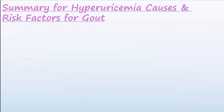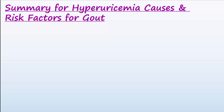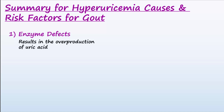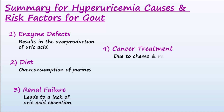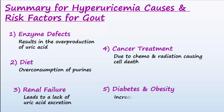In summary, conditions that lead to hyperuricemia and gout are as follows: enzyme defects that result in overproduction of uric acid; diet from the overconsumption of purines; renal failure, which causes a lack of uric acid excretion; cancer treatment, which causes cell death; and diabetes and obesity, which bring about a more acidic environment that favors uric acid deposition.